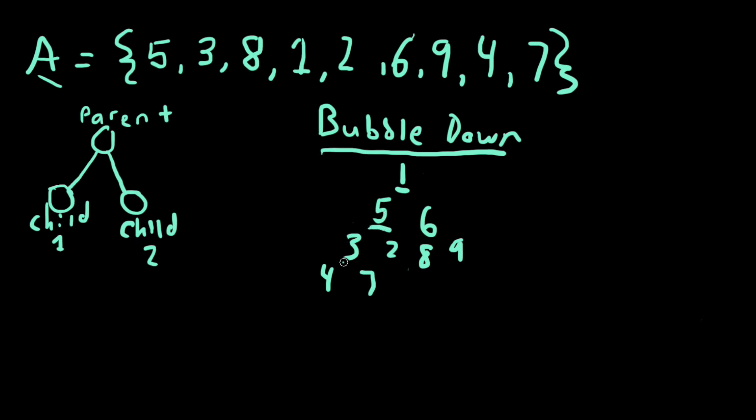However, 5 still has to compare its value to its children. 2 is the minimum value child, and it is less than 5. So, another swap occurs here, and 5 has no more children, so we'll end it there.